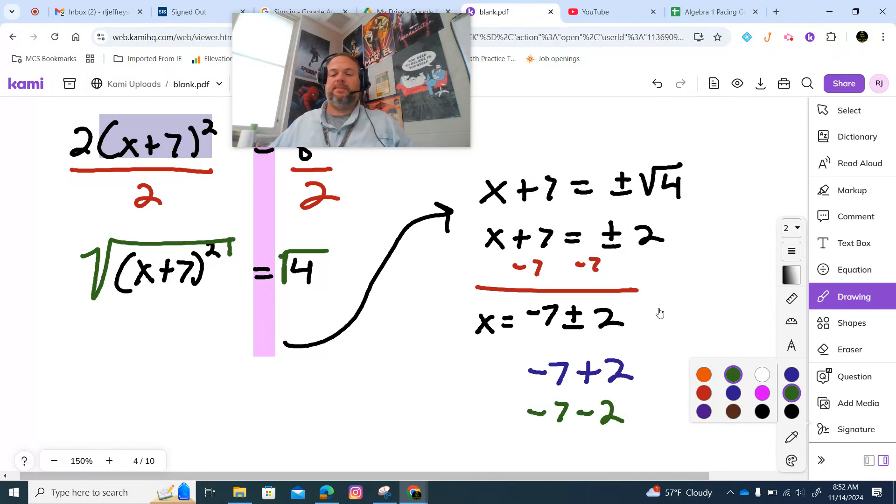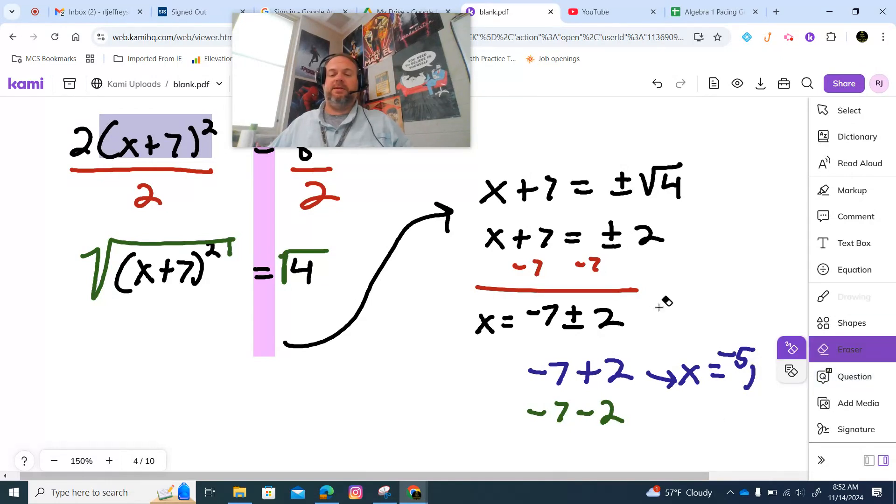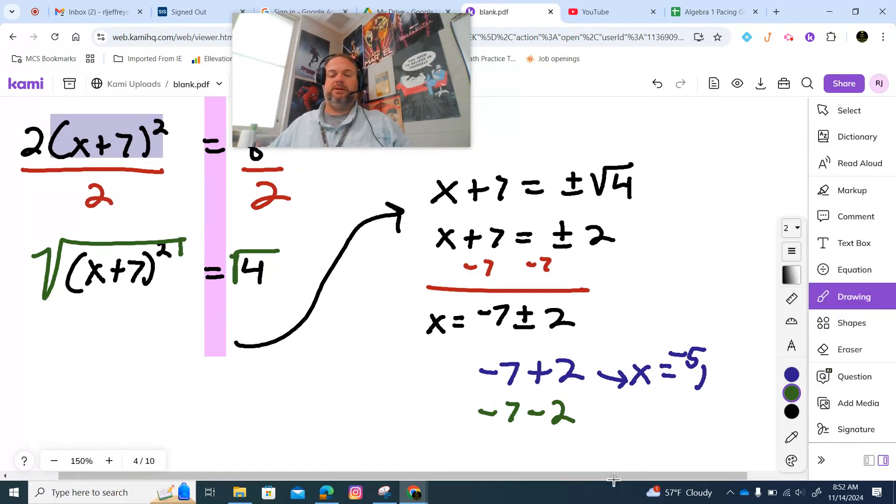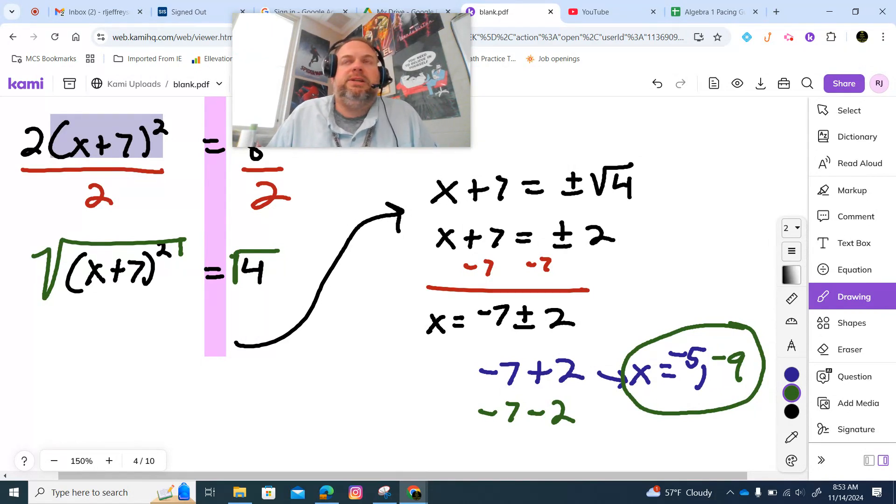Okay. Well, negative 7 plus 2 is negative 5. Negative 7 minus 2 is negative 9. So you would only do this if our square root is a whole number. Only if you could actually do that. Now, I've only done that on a handful. This may be the only one.